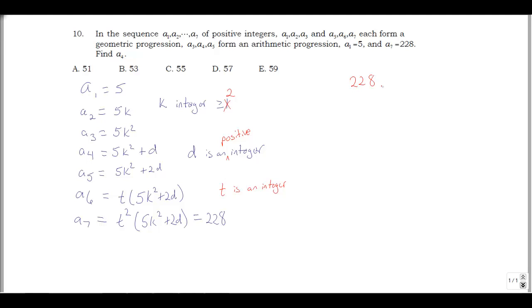So once we make those assumptions, what I'm going to do is I'm going to take 228, I'm going to factor this. 228 is 2 times 114. 114 is 2 times 57. 57 is 3 times 19. So 228 is 2 squared times 3 times 19. So that's my factorization of 228. And if I look at t squared times 5k squared plus 2d, well, this square part here has got to then be the 2 squared part, or maybe it's 1. So what we're going to get here is because of the way this factors, t is 1 or 2.